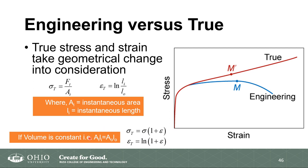Under the constant-volume assumption, we can back-calculate and convert between engineering and true stress and strain expressions. True stress and true strain are mostly used for experimental work in the lab; for material design at scale, engineering stress and strain are used. The true stress-strain curve keeps rising higher because the instantaneous cross-sectional area keeps getting smaller as necking progresses.